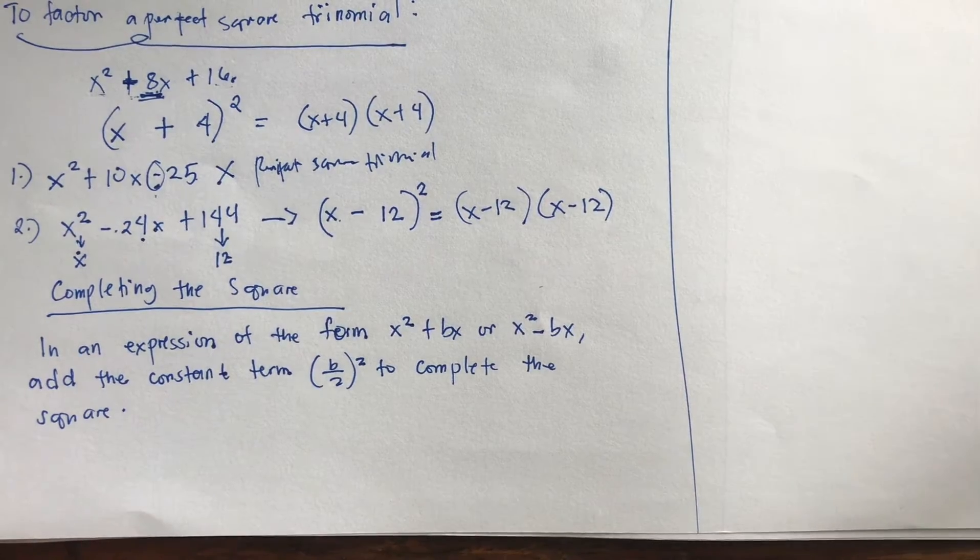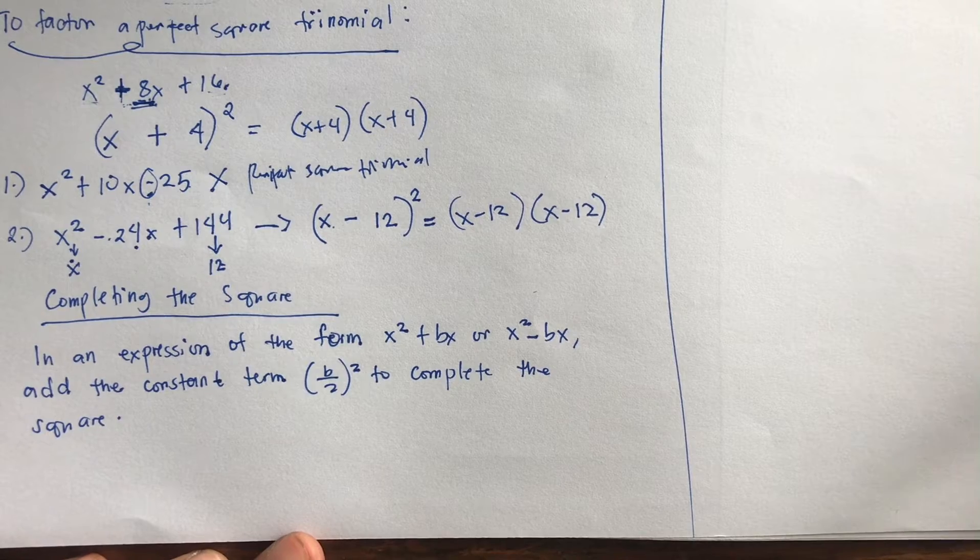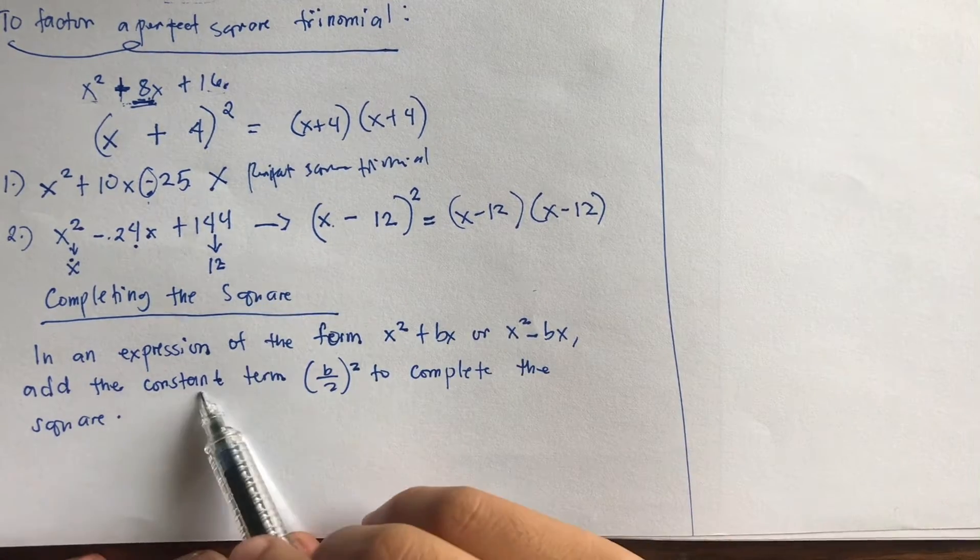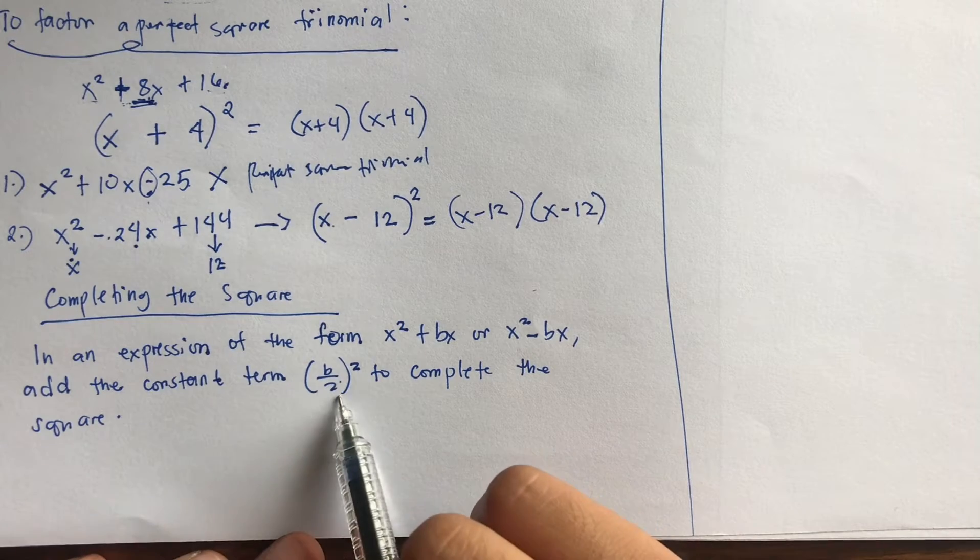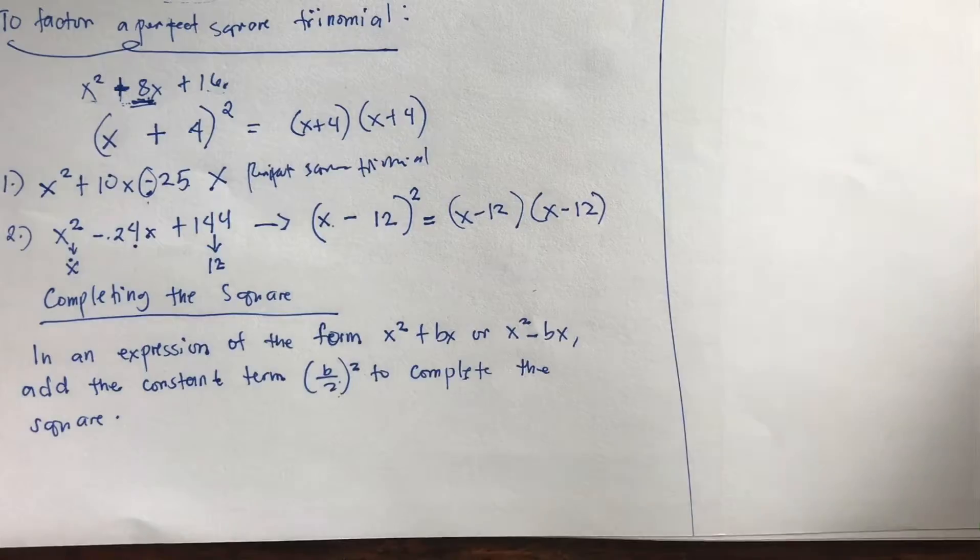Completing the square: In an expression of the form x squared plus bx or x squared minus bx, add the constant term b over 2 squared to complete the square. For example...